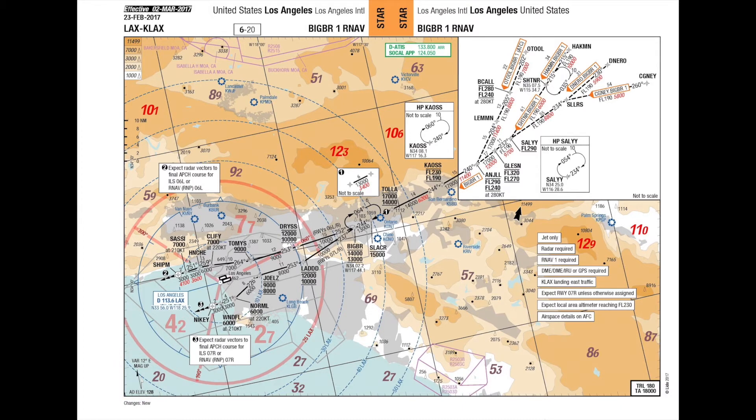At several airports, standard arrival routes may end in open end legs, with a termination for radar vectors to the final approach. Where officially published and deemed useful for pilots, arrival transitions — RNAV and/or conventional — leading to the standard arrival route may be incorporated within the STAR chart, or may be available as a separate arrival transition chart.